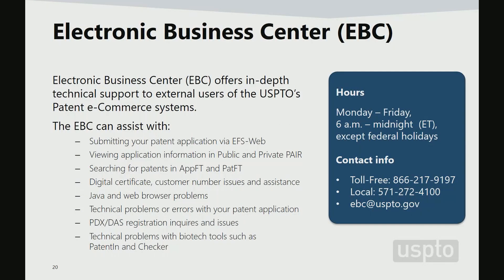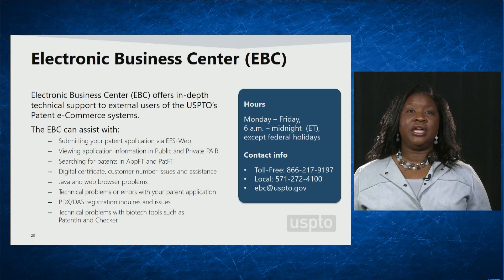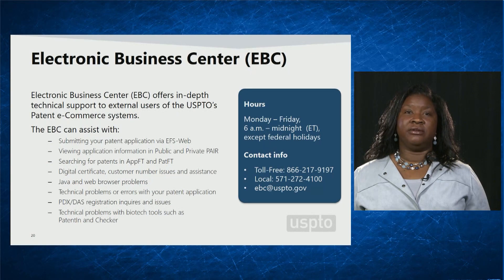A great resource to help with electronic filing and viewing systems is the Patent Electronic Business Center. They are open Monday through Friday, 6 a.m. to midnight Eastern Time, except for federal holidays. They can be reached toll-free at 866-217-9197 or by email at ebc@uspto.gov.